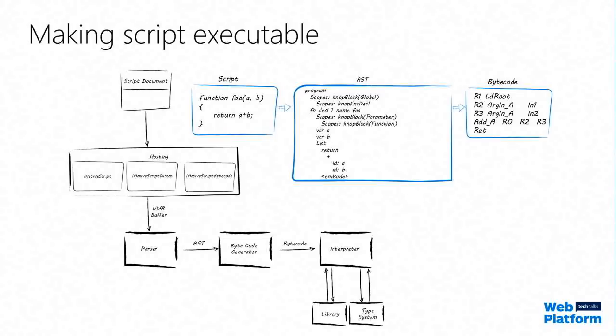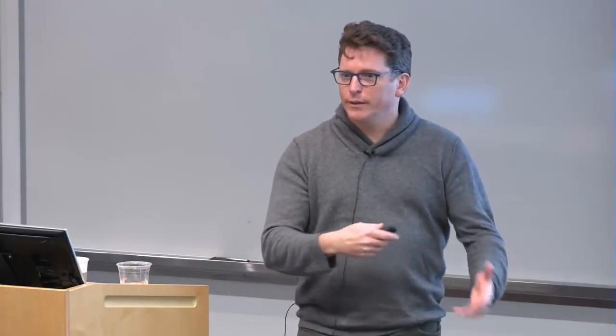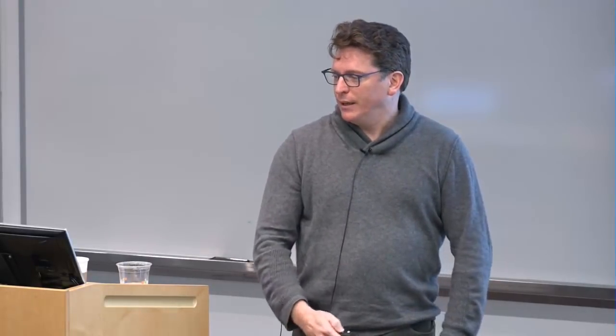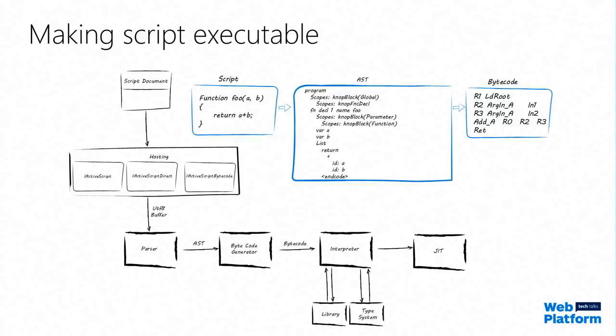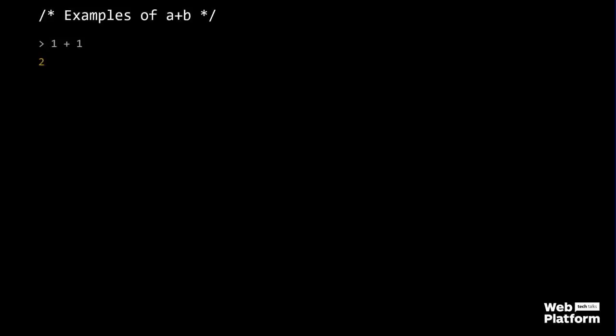The bytecode feeds into the interpreter, which goes step by step over each instruction to execute them. It interacts with the library and the type system for any objects that are created or referenced. Eventually, we have the JIT to generate faster code for the function.